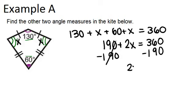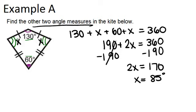And we get 2x equals 170, which means that x equals 85. So that means the other two angle measures, which were the missing ones in green, are each 85 degrees.